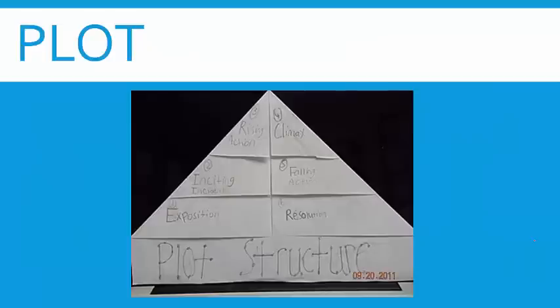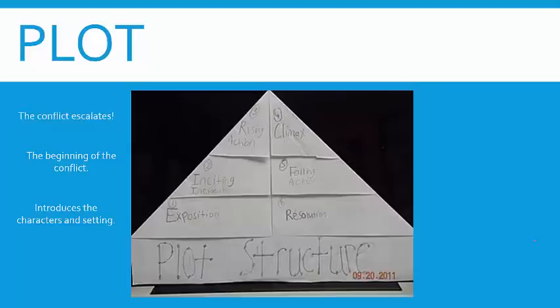Next we move into plot for analysis. The plot structure of most short stories follows these items: first you've got the exposition or introduction, where you introduce the characters and the setting. Then you have the inciting incident — the beginning of the conflict. Then you've got the rising action, where the conflict escalates. Then you reach the climax, which is the action at its maximum point. Finally you've got the falling action, where the conflict is resolved, as well as the resolution.